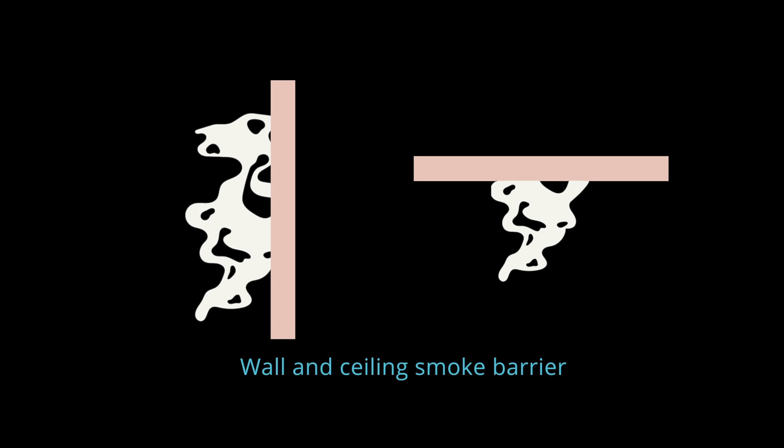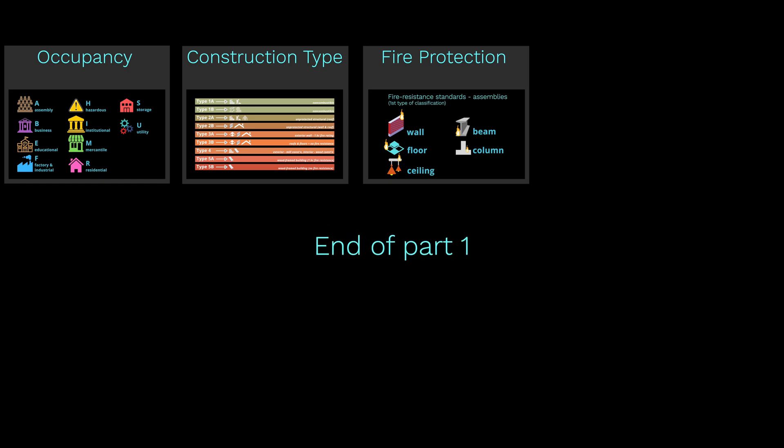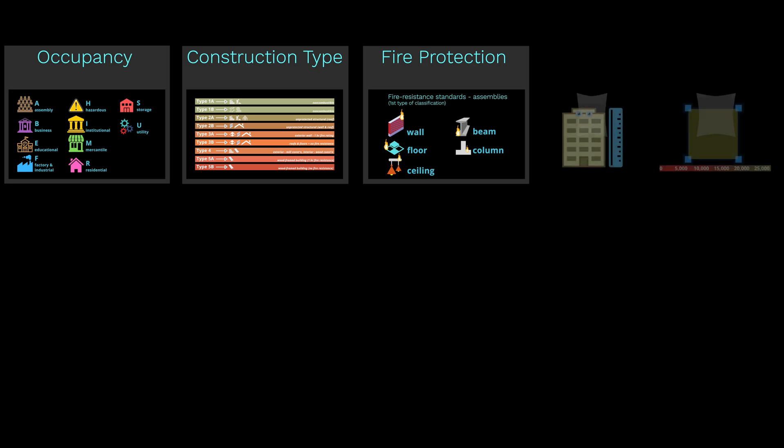This is the end of part one. Now you have a pretty good grasp of where the IBC came from, building occupancy, construction types, and how to protect buildings from fire. In part two, I'll show you the essential relationship between these factors and the building's height and area.